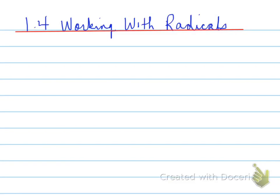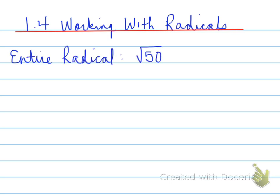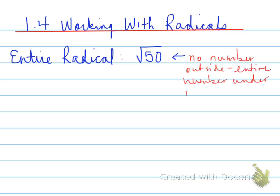Section 1.4: working with radicals. Entire radicals look like root 50 — basically, the entire number is under the radical sign with no number outside. So this is your radical sign, this is the number underneath, and you would describe this as root 50.